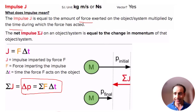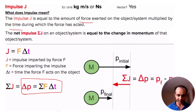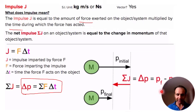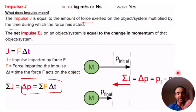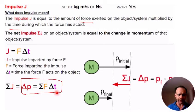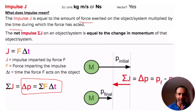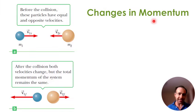Delta P is basically P-final minus P-initial. As with every delta, we take the final quantity minus the initial quantity. There are multiple ways to look at this: from a total F times T perspective, or from P-final minus P-initial — whichever is most practical for your purposes.